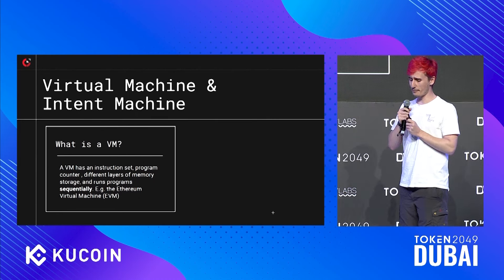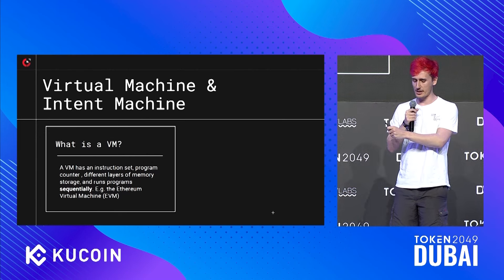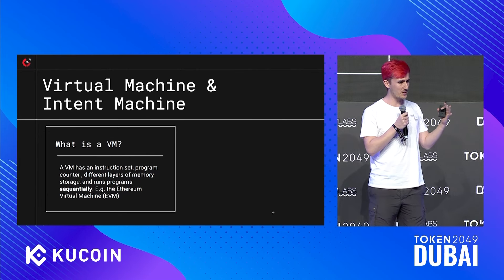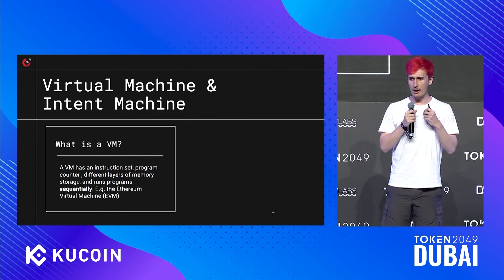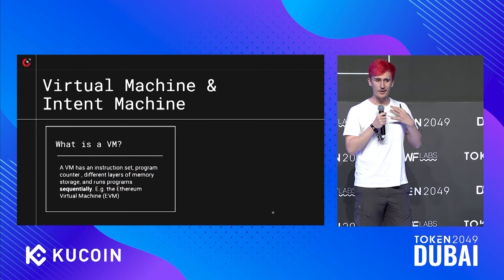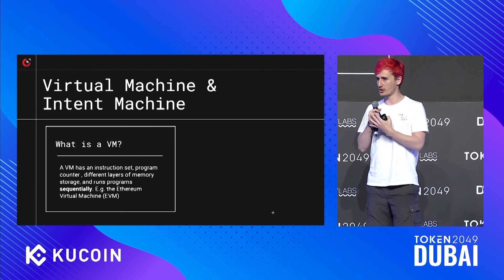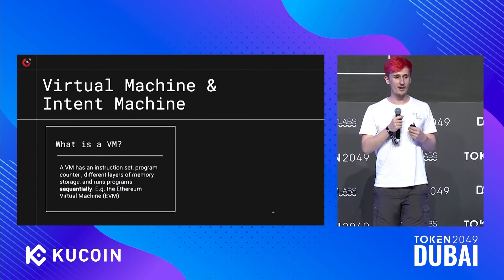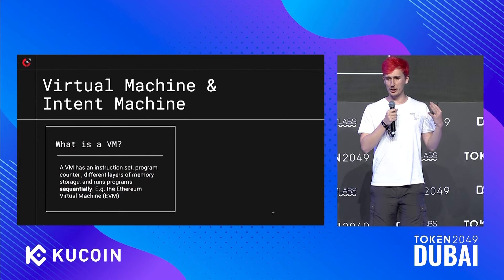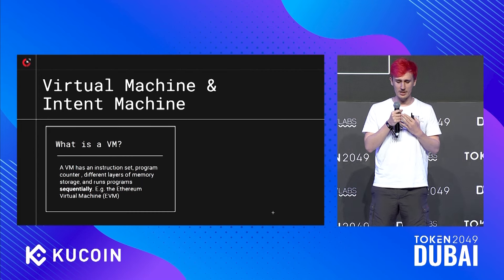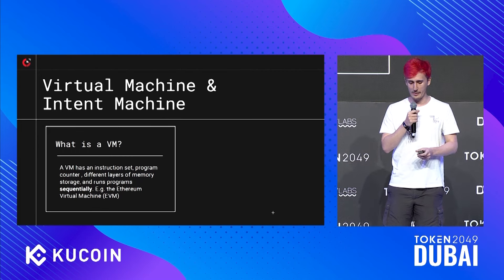What's the difference between what a virtual machine does versus what an intent machine does? A VM really is an instruction set — it's a program counter, a bunch of different layers of memory. And importantly, it runs programs sequentially. The best examples we currently have are the Ethereum virtual machine, the Solana virtual machine, and the virtual machine of Near. There are many kinds of virtual machines, but fundamentally they always follow this model of imperative sequential program execution.